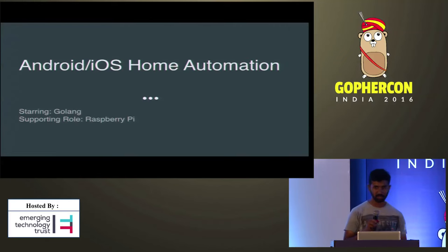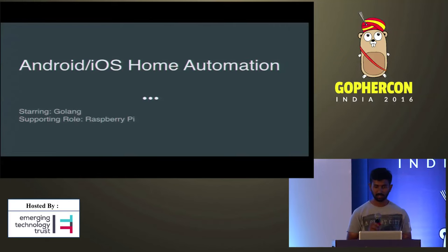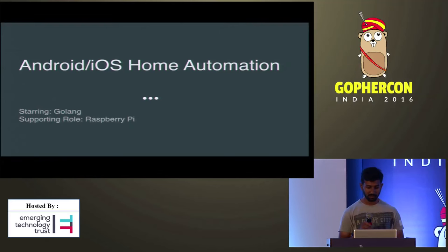Hello everybody, my name is Praveen. I'm a developer at Phoenix. Today I want to talk about home automation using Android or iOS devices with the help of Golang as back-end code and Raspberry Pi as the device that interfaces between them. I always wanted to create a home appliance controller that can control devices like lights or bulbs in my room. As I was new to Go, I thought why not start something in Go.